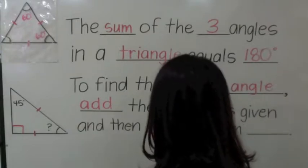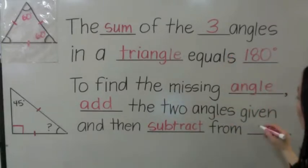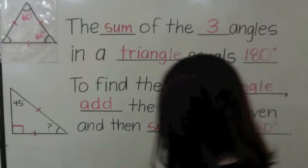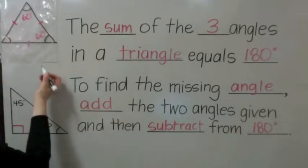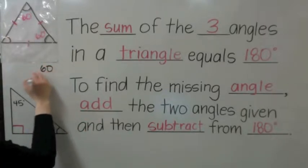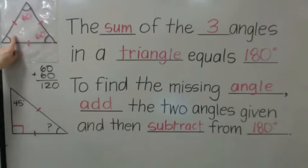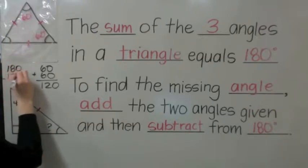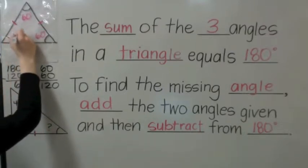You're going to subtract from 180, because three angles of a triangle equal 180 degrees. If I add 60 plus 60, that's 120. Then I take 180 and subtract 120 from it. 180 minus 120 is 60. So that's how I know the missing angle is 60 degrees. I also know it's 60 because they all have equal angles.